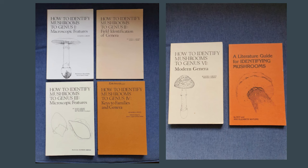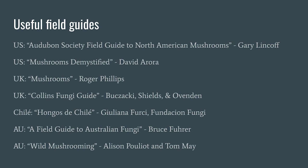If you really want to get down to specifics, some good guides are How to Identify Mushrooms to Genus — there's a whole series from one through to six. They're starting to age a little bit now with some information outdated due to species having moved to different genera, but they cover macroscopic to microscopic features with lots of helpful keys for getting down to family and genera. Some other useful field guides: the Audubon Society Field Guide to North American Mushrooms by Gary Lincoff, Mushrooms Demystified by David Arora — a huge book but a stunning guide with lots of keys.